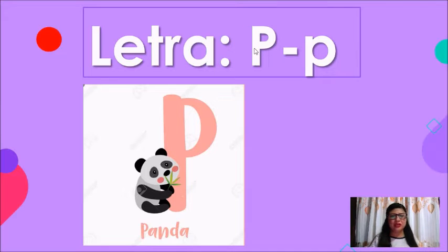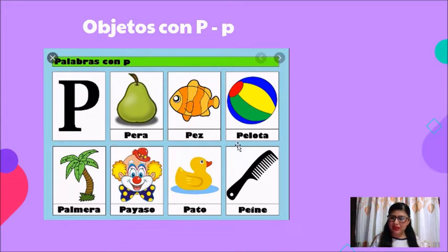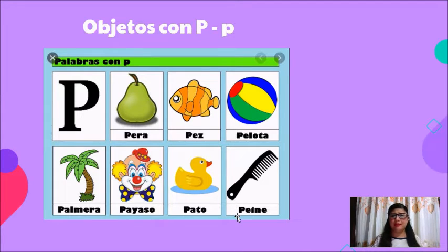Ya que identificamos la forma y el sonido, vamos a identificar algunas palabras que comienzan con esta letra. Te estoy poniendo una tabla con la letra P y algunos objetos: pera, pez, pelota, palmera, payaso, pato y peine comienzan con la letra P. Tenemos aún más, como puede ser piñata, paleta, papa, perico, entre muchas otras.